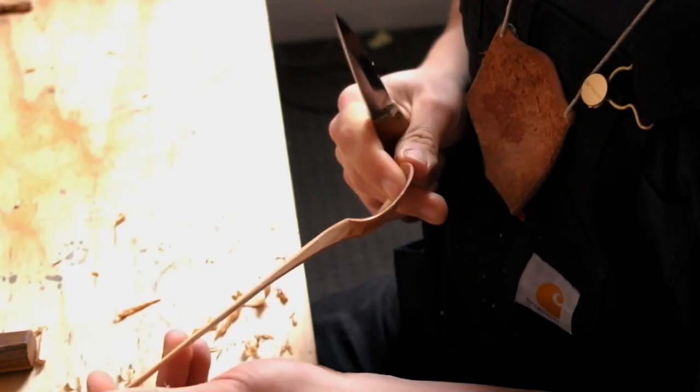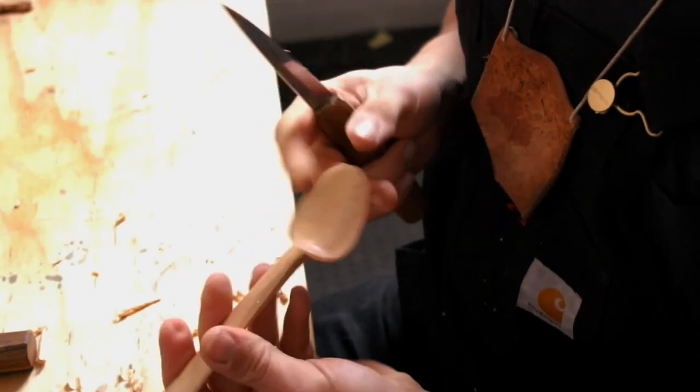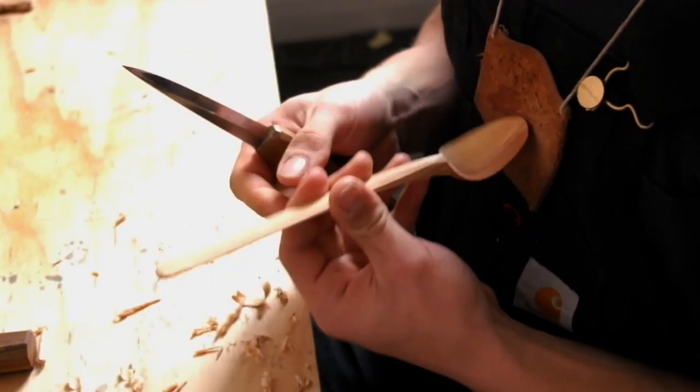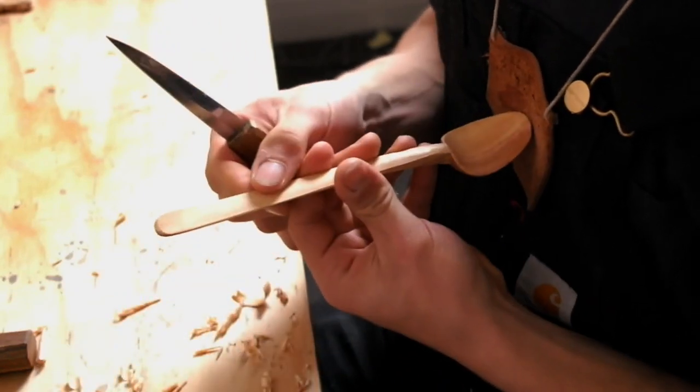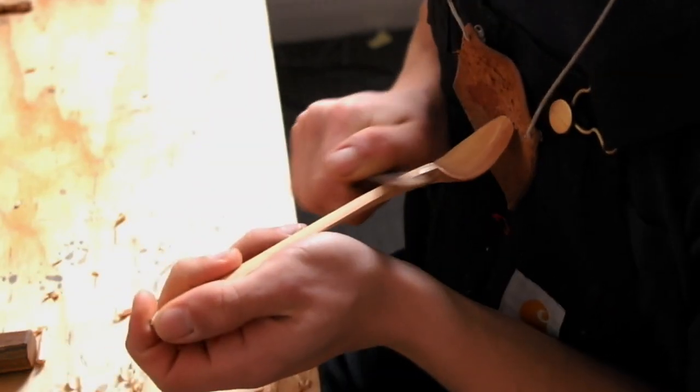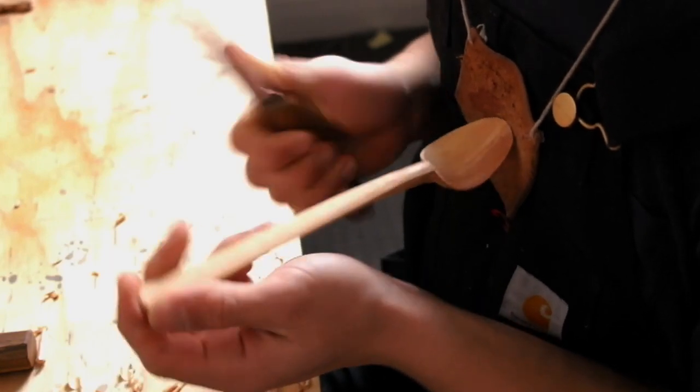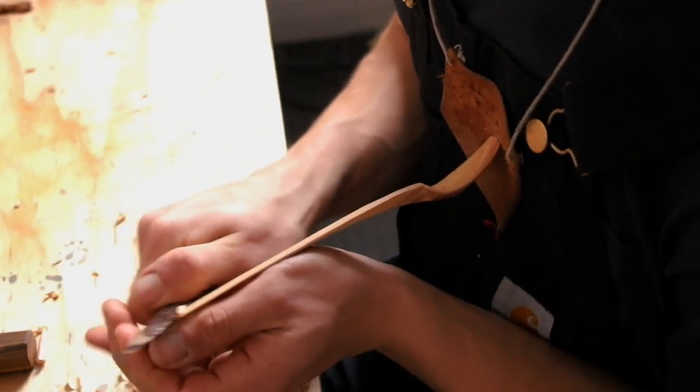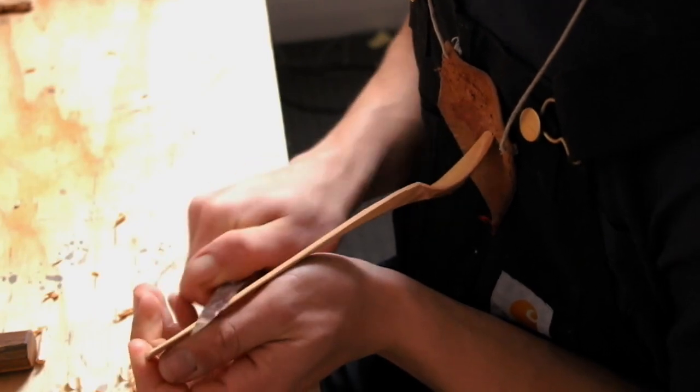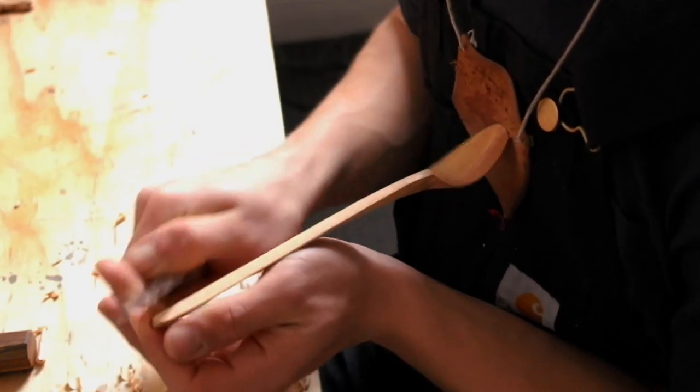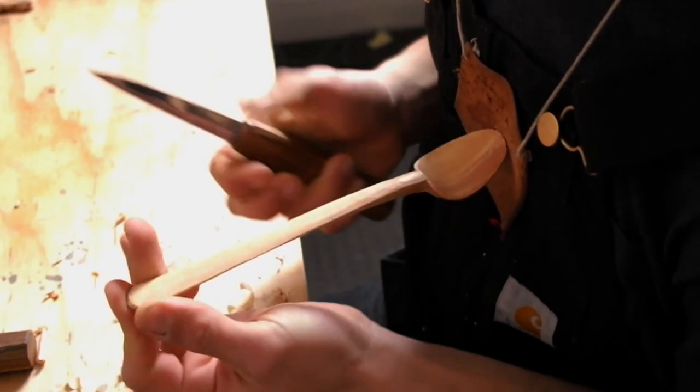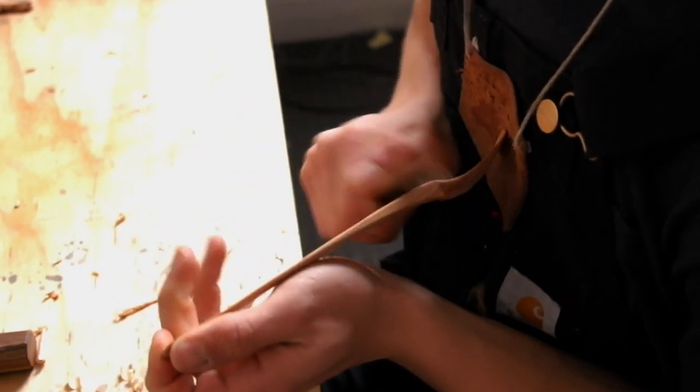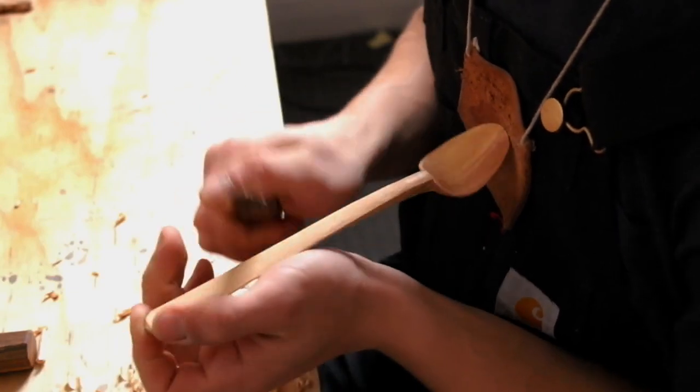Because I've already carved the bowl to the final thickness, which is now very thin, I've got to be careful not to put too much pressure on it when I brace it against my chest, otherwise I could break it. And I'm not making any particular effort for this handle to have well defined facets, but they are going to arise as a consequence of the types of cuts and techniques I'm using with my knife here.